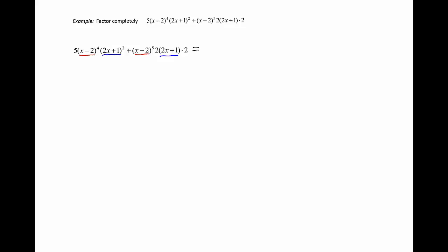So if I am to factor out common factors, those common factors are x minus 2 to the fourth power. There are four factors x minus 2 common to both groups as well as one factor 2x plus 1.